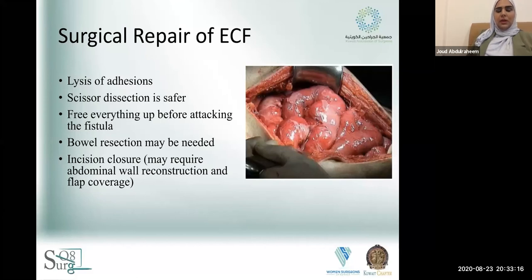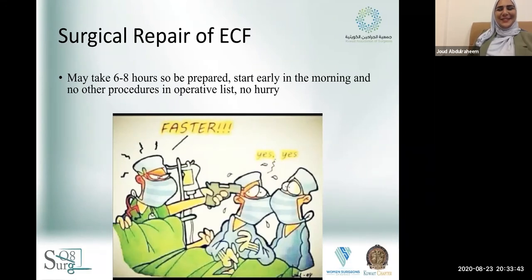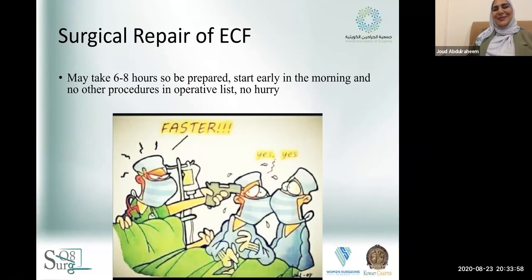Free everything up before attacking the fistula. Bowel resection may be needed because the area of the fistula involving small bowel or colon may require resection of the affected segment. For incision closure, especially in open abdomen cases, you need to consider abdominal reconstruction and may require flap coverage. This surgery may take six to eight hours — be prepared and start early in the morning with no other procedures and no hurry.